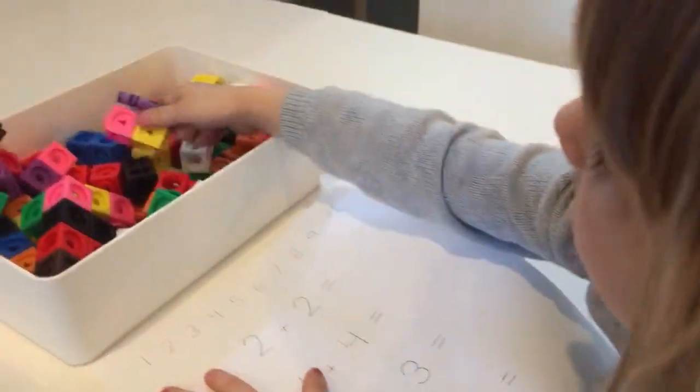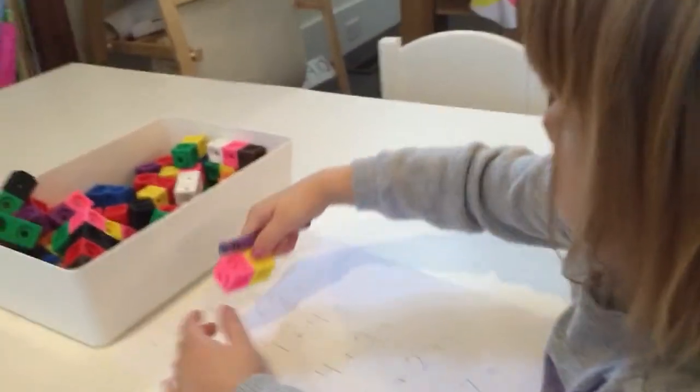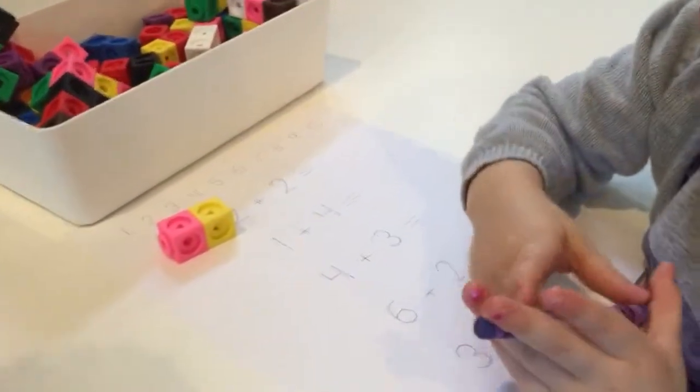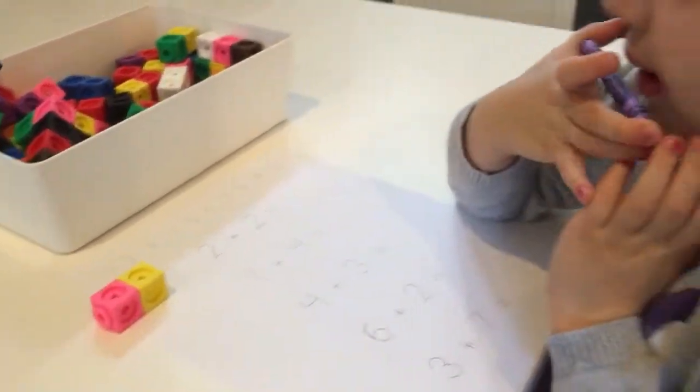Two. Two. So what do you need to do? Get two what? Two what? Two blocks. Good. And you put them where? On the side, right? And then what do you do?